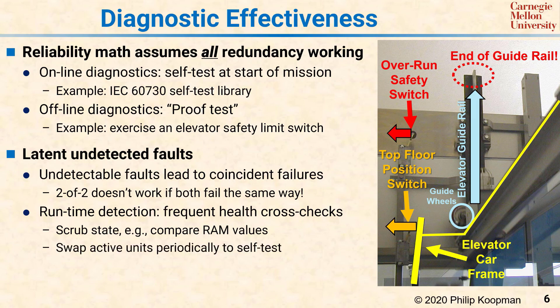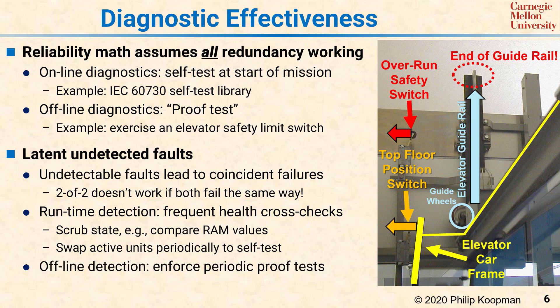You also want to swap active units in a primary-standby pair so that each unit gets a chance to be the lead and gets exercised in normal use. Finally, you need to do periodic offline detection by enforcing proof tests that can consist of both extensive self-tests and human-assisted diagnostics.